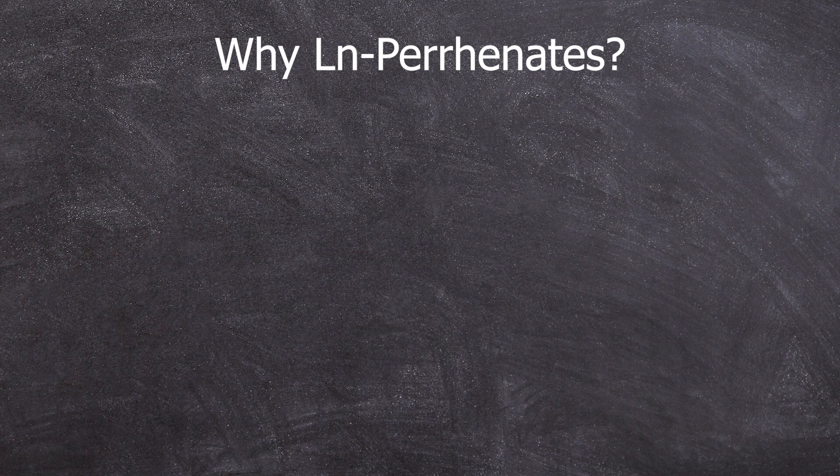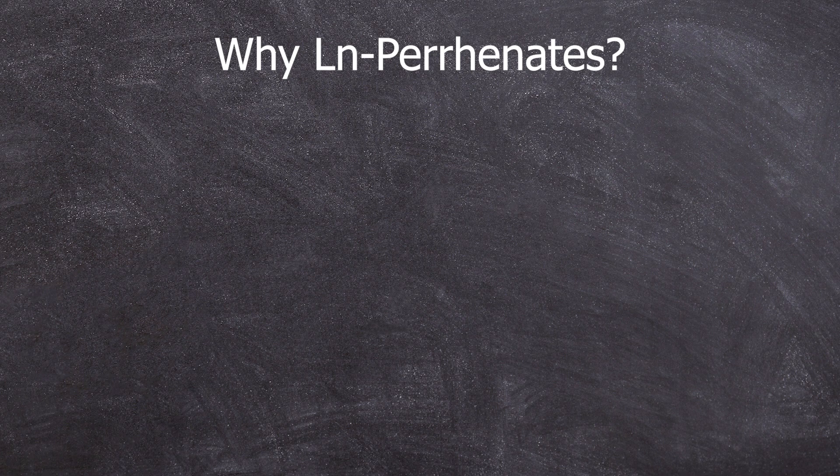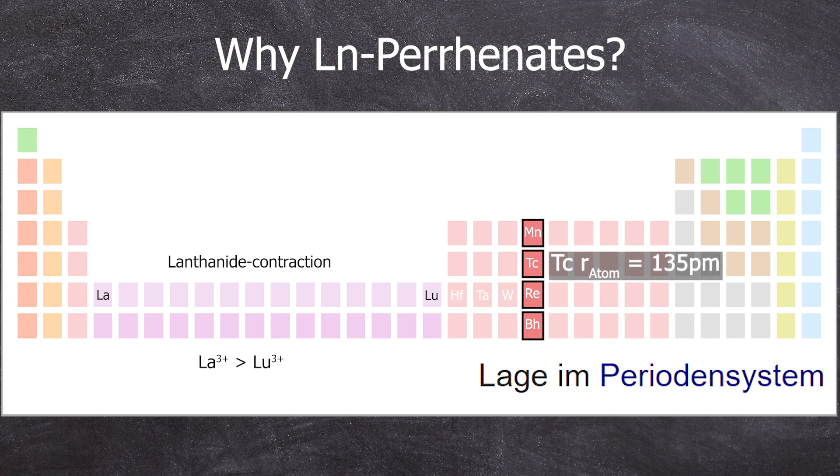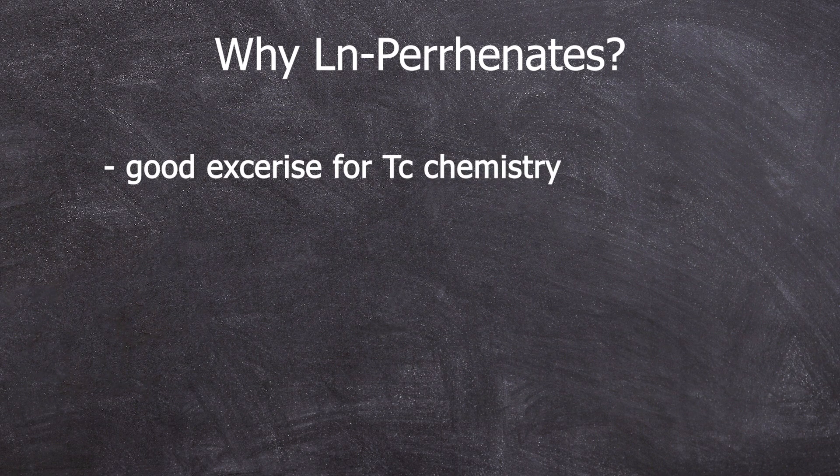So, lanthanide perrhenates, why do something like this? Because the ultimate goal here is to work with technetium, and with a glance at the periodic table, you can see why rhenium. Rhenium is extremely similar to technetium, especially due to the lanthanide contraction, which occurs between the 4D and the 5D elements. A quick aside, the lanthanide contraction describes a phenomenon where the ionic radius decreases within the F-block, despite having the same charge. This phenomenon affects the subsequent elements, so that technetium has the atomic radius of 135 picometers, just like rhenium, even though there is a whole period with 32 electrons between them. And that's why perrhenates.